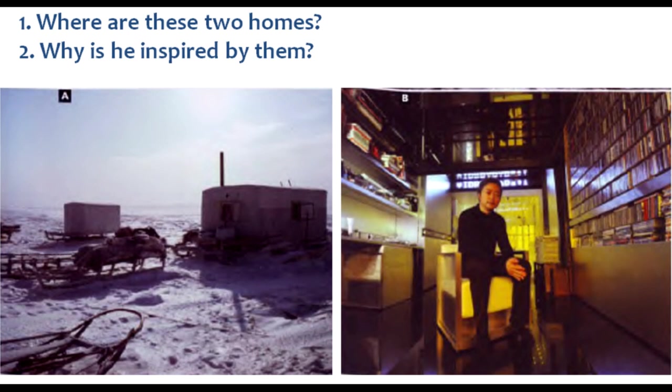Well, there were two homes in particular that got me interested in this. One was the houses of the Dolgan people in central North Russia, who live a lot of the year in freezing temperatures, as low as minus 40 degrees.